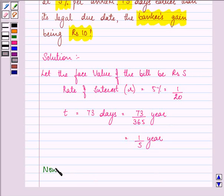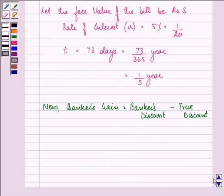Now, we are given that banker's gain is equal to banker's discount minus true discount. We are given banker's gain as rupees 10. So, we have rupees 10 equal to SRT minus SRT upon 1 plus RT.